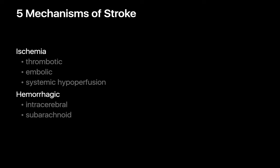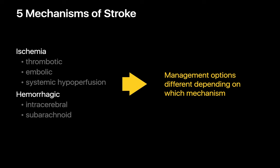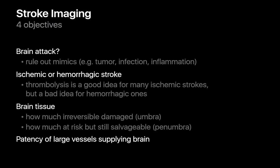Strokes generally occur because of one of these five reasons, and how a patient with a stroke is managed will depend on which of these mechanisms was responsible for their particular stroke. We're now ready to discuss what the objectives of stroke imaging are. There are four major objectives. One, establishing if the patient is having a brain attack or some other disorder, like a tumor, infection, or inflammation that's mimicking a brain attack.